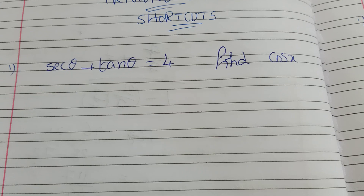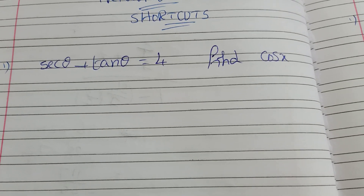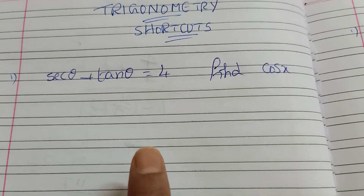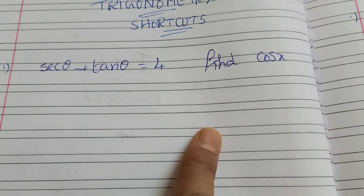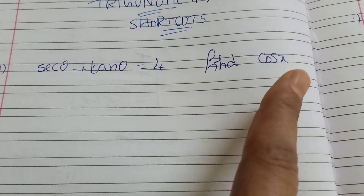I am going to show you the first question: sec θ + tan θ = 4. Now find cos x.